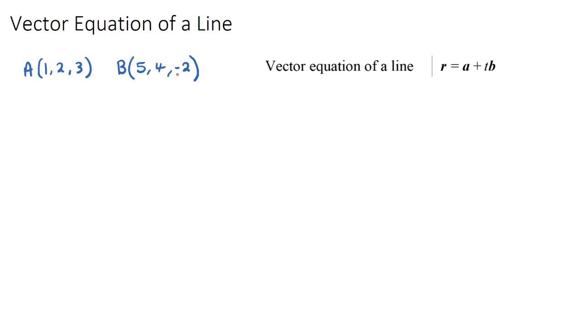Now, what we're going to do is we're going to find the vector equation of a line that passes through both of these two points.